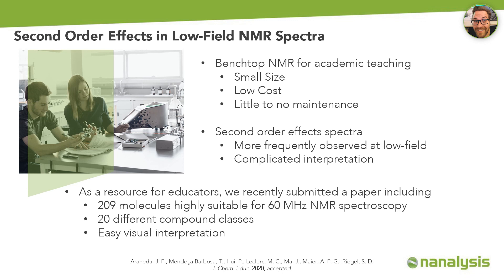It should be noted that low-field instruments by nature are more prone to produce NMR spectra with second-order effects. In contrast to first-order spectra, those with second-order effects cannot easily be interpreted by eye and some information is not extractable. While there are plenty of compounds that do not show second-order effects at low field — just like the spectra discussed in this presentation — there are others that do. This can be concerning for educators who do not want to add this extra layer of complexity. To help address this concern, we recently submitted a paper presenting a list of more than 200 molecules from 20 compound classes whose NMR spectra can be visually interpreted using 60 MHz instruments.